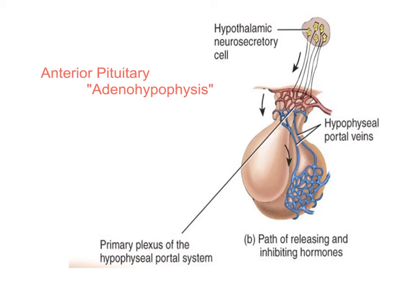Let's explain everything. We're going to look at the anterior and posterior pituitary. The anterior is known as the adeno-hypophysis — I always remember that anterior starts with A, just like adeno-hypophysis. Adeno means gland, and the anterior pituitary is sometimes known as the glandular component of the pituitary, versus the posterior, which is the neuro-hypophysis.